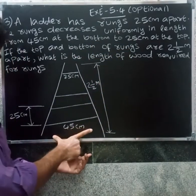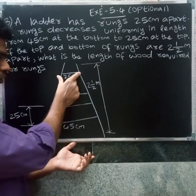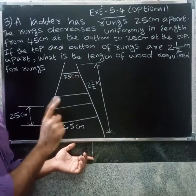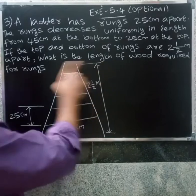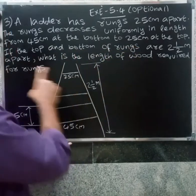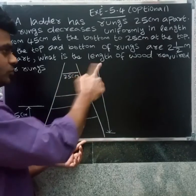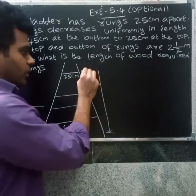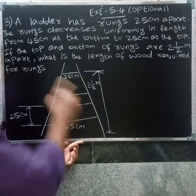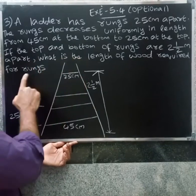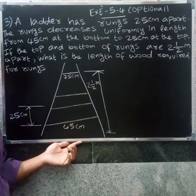Starting at the beginning, the bottom rung is 45 cm. Going up, the rungs decrease until the top rung is 25 cm. The top and bottom of the ladder are 2 and a half meters apart — so this total distance is 2.5 meters. The question asks: what is the total length of wood required for the rungs?